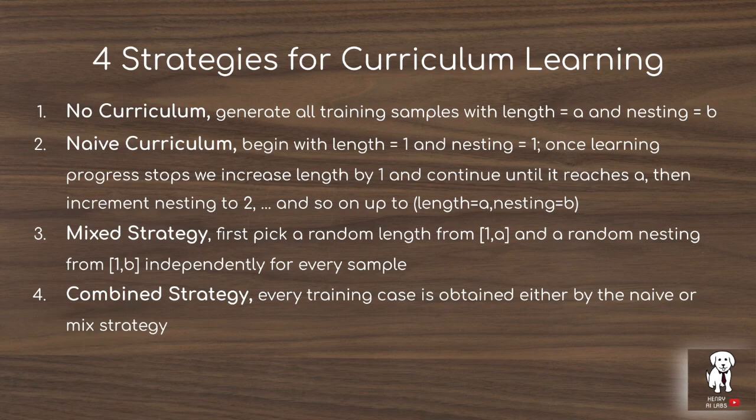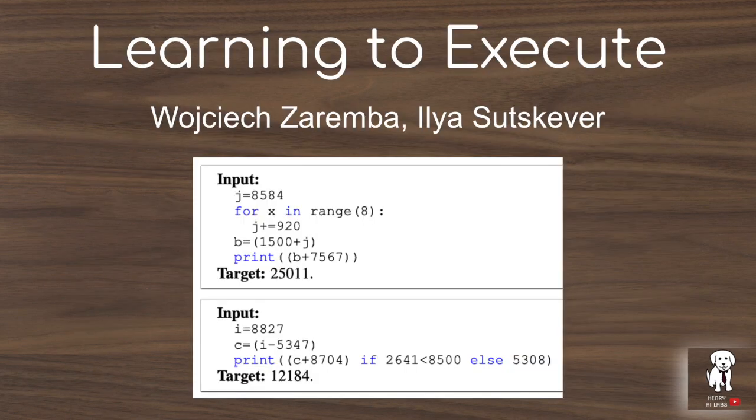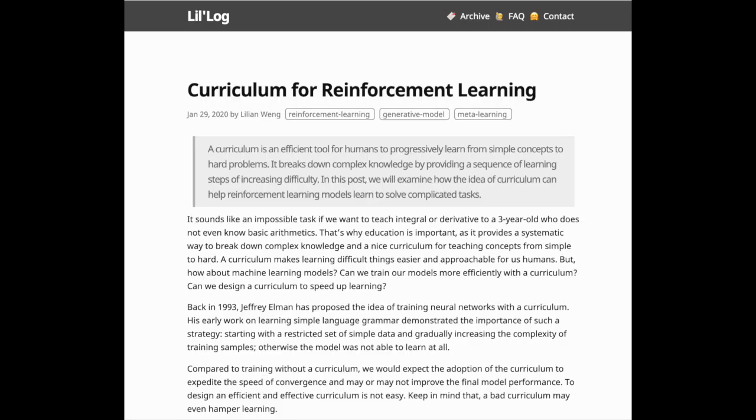The four strategies are: not using a curriculum and only sampling from the target hard distribution; using a curriculum of progressively difficult programs; sampling from easy and hard samples uniformly; and the best-performing strategy, which combines sampling from a progressively growing difficult schedule and randomly sampling from the easy-to-hard distribution. I was motivated to explore this paper after reading Lillian Weng's latest blog post on curriculum for reinforcement learning, which I highly recommend and is linked in the description.